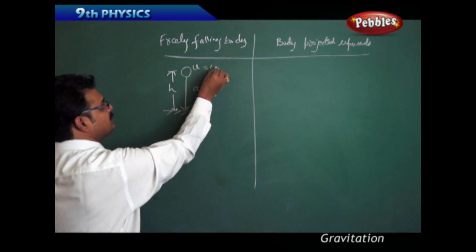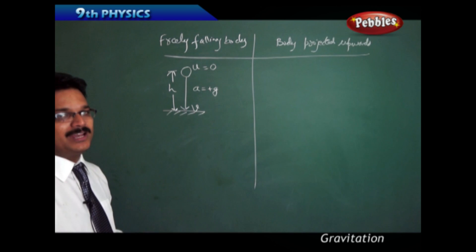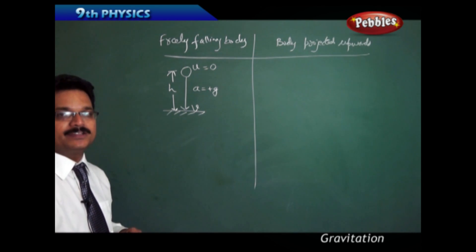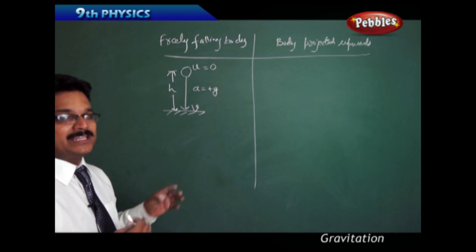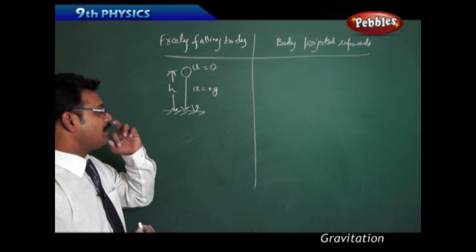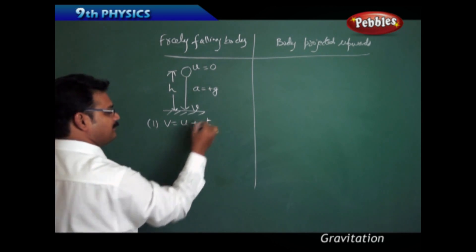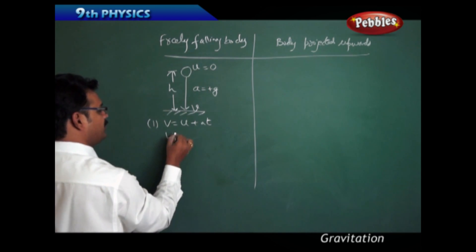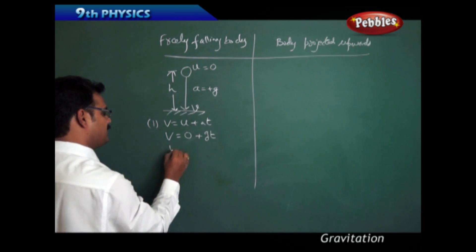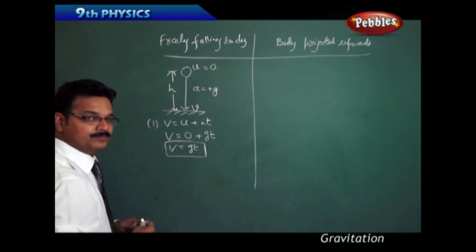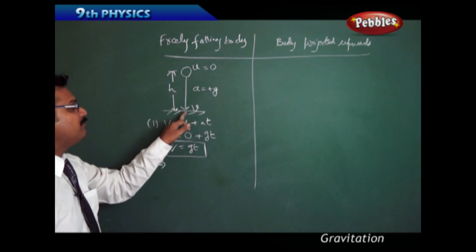When the body falls freely, its initial velocity U is equal to 0. Applying these conditions to the three kinematic equations — V = U + AT, V² - U² = AS, and S = UT + ½AT² — we apply the conditions to the first formula. With U = 0, A = G, we get V = GT.